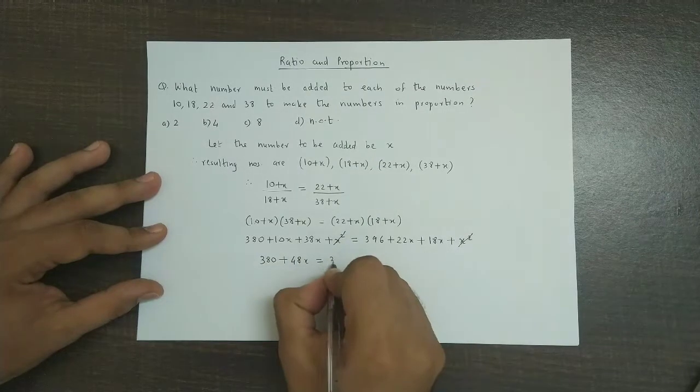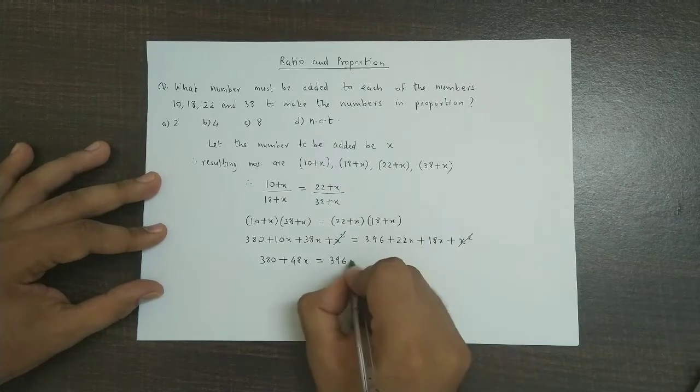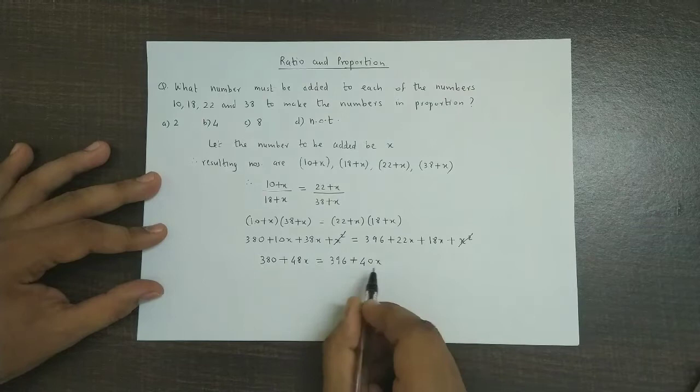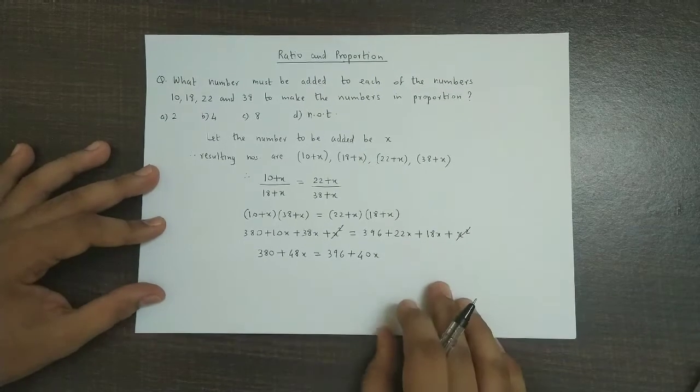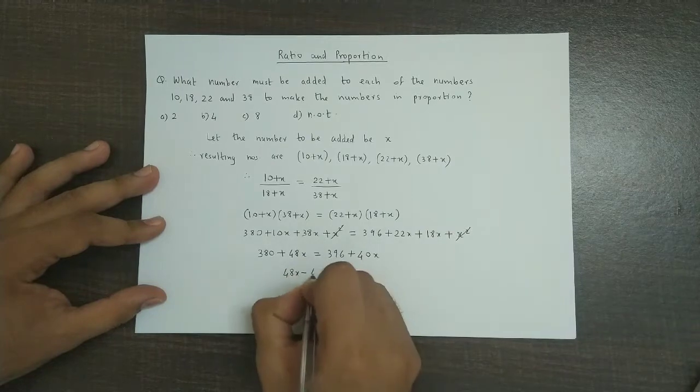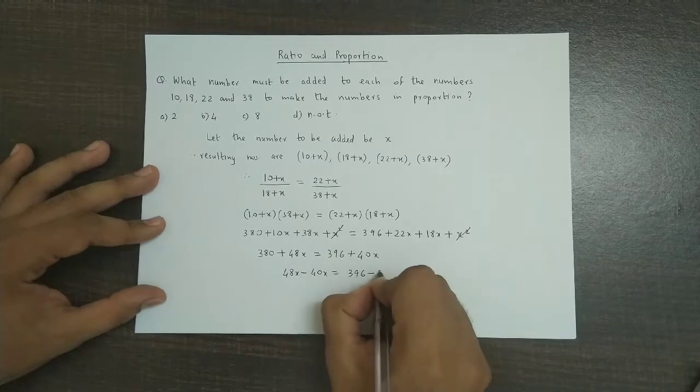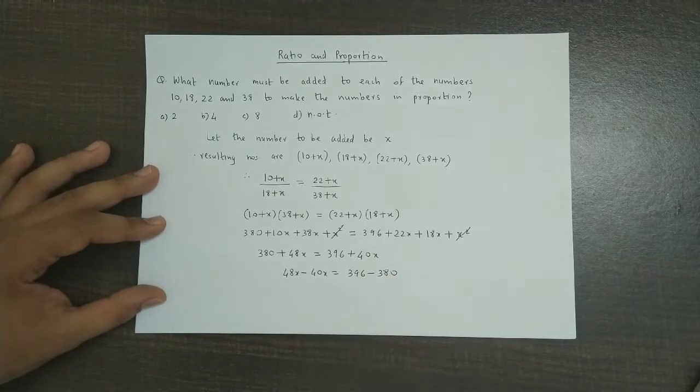On the right hand side we have 396 and this would be 40x. So bringing the x terms on the left hand side, we have 48x minus 40x is 396 minus 380.